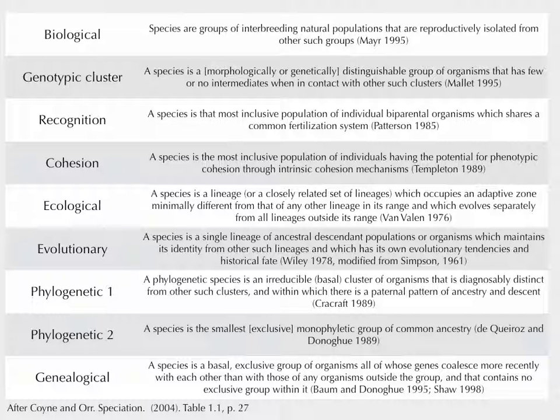For reasons like this, biologists have made a whole plethora of species concepts. The one you should probably learn is the biological species concept, because that's the most popular. Basically what the biological species concept says is: species are groups of interbreeding natural populations that are isolated from other such groups.